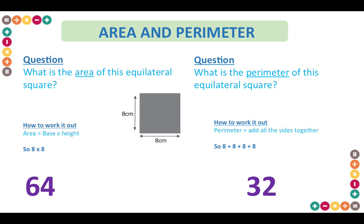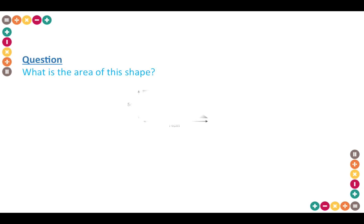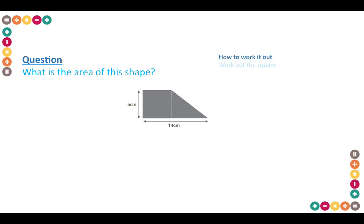Let's move on to a slightly harder area question — find the area of this shape. You can see that there are two shapes joined together. A key tip is to break it down. The height of the square is 5 centimetres and the total width is 14 centimetres. Since it's a square, the bottom is also 5 centimetres, giving an area of 5 times 5, which is 25.